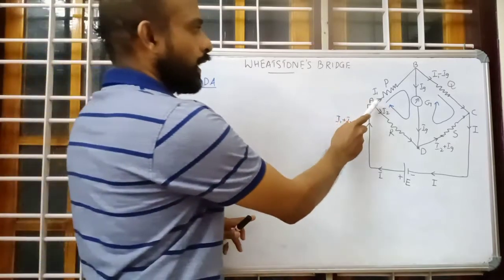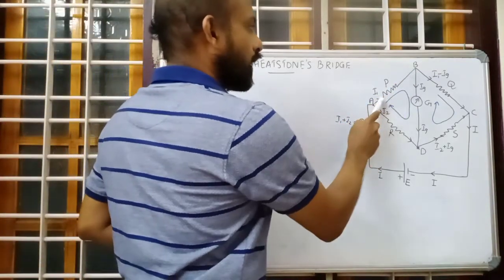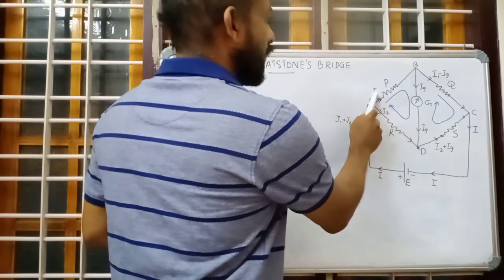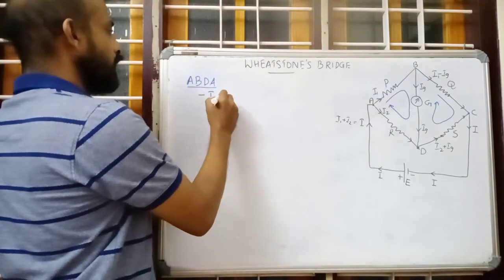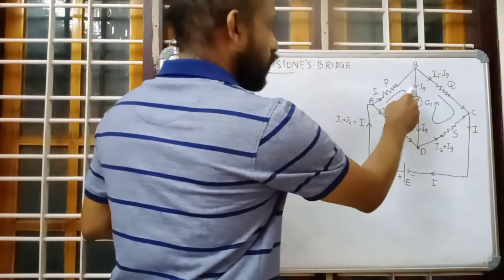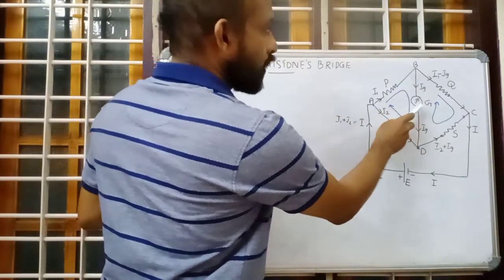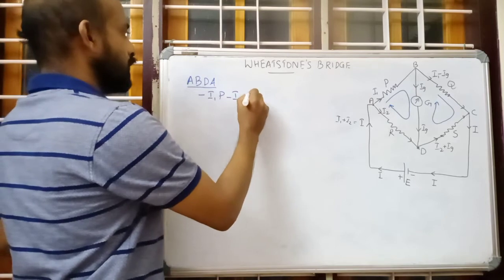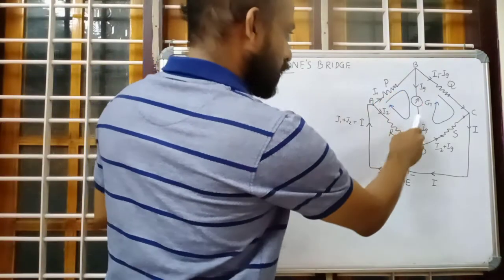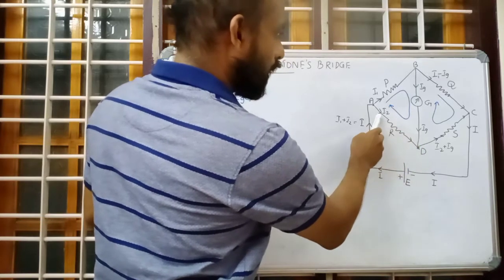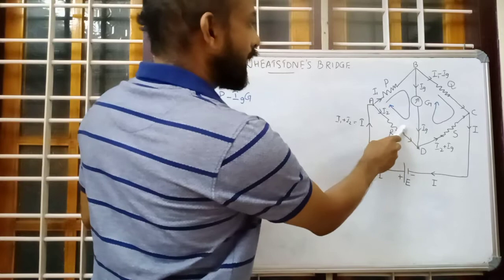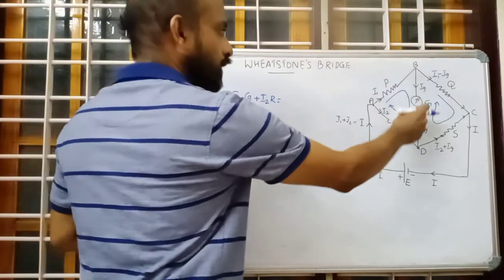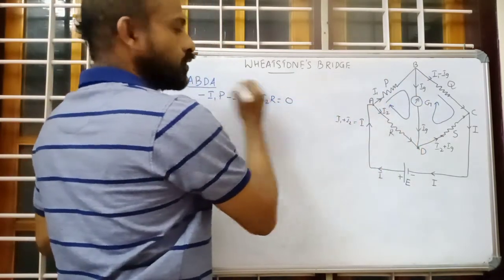For loop ABDA, we travel from A to B — current also in the same direction, so potential drop is negative: minus I1·P. Then travelling downward through the galvanometer in the same direction as current gives minus Ig·G. Then moving upward, current is in the opposite direction, so we give positive potential: plus I2·R. There is no cell in this loop, so the equation equals zero: minus I1·P minus Ig·G plus I2·R = 0.